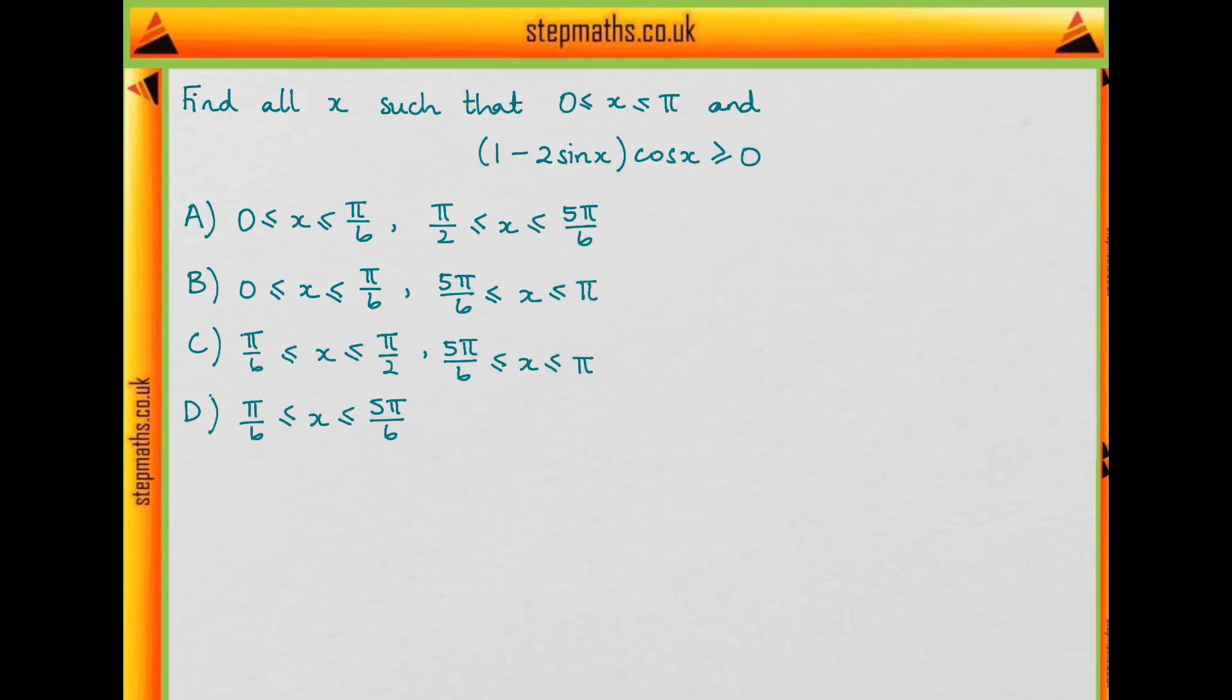Okay, so this is only going to hold if both (1 - 2sin x) and cos x have the same sign, i.e. if they're both greater than or equal to 0 or both less than or equal to 0.